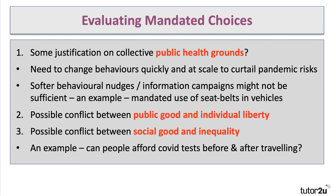However, there are some conflicts between collective health protection and the public good on one hand, and individual liberties — people's right to make their own choices — on the other. There can also be a conflict between the social good and inequality. A topical issue is whether people can afford, for example, a vaccine passport requirement to travel overseas along with tests before and on arrival. That involves quite a significant private cost, and many people simply won't be able to afford Covid tests before and after travelling — so it does potentially conflict with people's effective incomes.